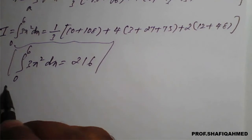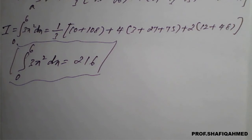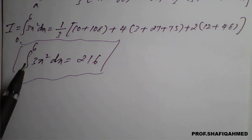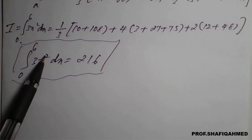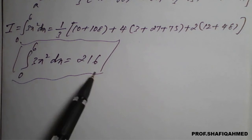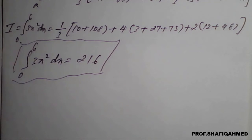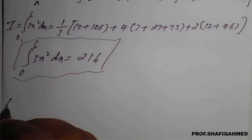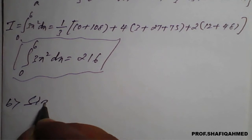So this is the solution of the given data using Simpson's one-third rule. If you go for direct integration of 3x squared, then with the lower and upper limits you will get the same answer only. This is by Simpson's one-third rule. Now we will go for the second rule, that is Simpson's three-eighth rule, applied to the same question.